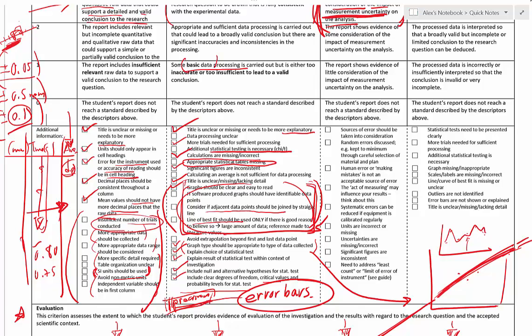A systematic error is like having a scale that reads 0.01 grams when nothing is on it — everything you measure will be off by that amount, affecting the accuracy of your measurements. Accuracy is about how close your measurements are to the actual value. A random error is something like having controlled all the variables but someone opens a door and a gust of wind affects one of your trial readings, giving you an outlier.